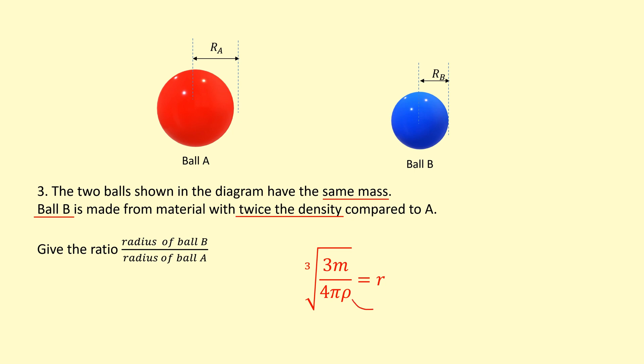So the density of B is 2 times bigger, and that's at the bottom of the equation and it's under a cube root. So that means that the radius of B will be cube root and then 2 like this, which is approximately times 0.8 smaller, because it's more dense.